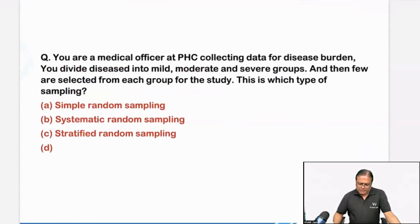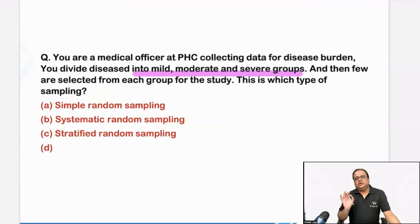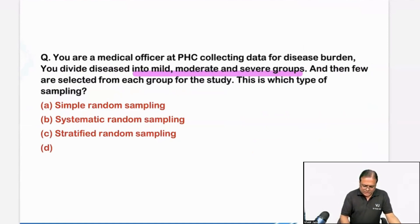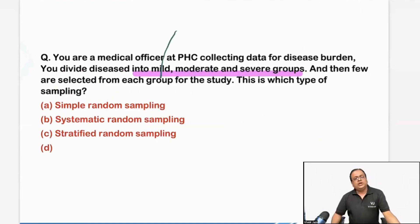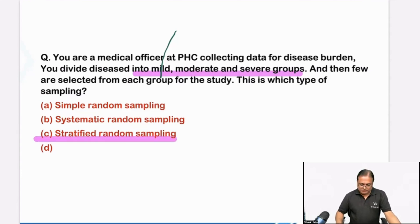There was a question on a medical officer at PHC collecting data for disease burden. You divide diseased people into mild, moderate, and severe groups. Groups means strata or layers — you are doing stratification. After that, you are selecting units from each group, so you are doing sampling. This is stratified random sampling.